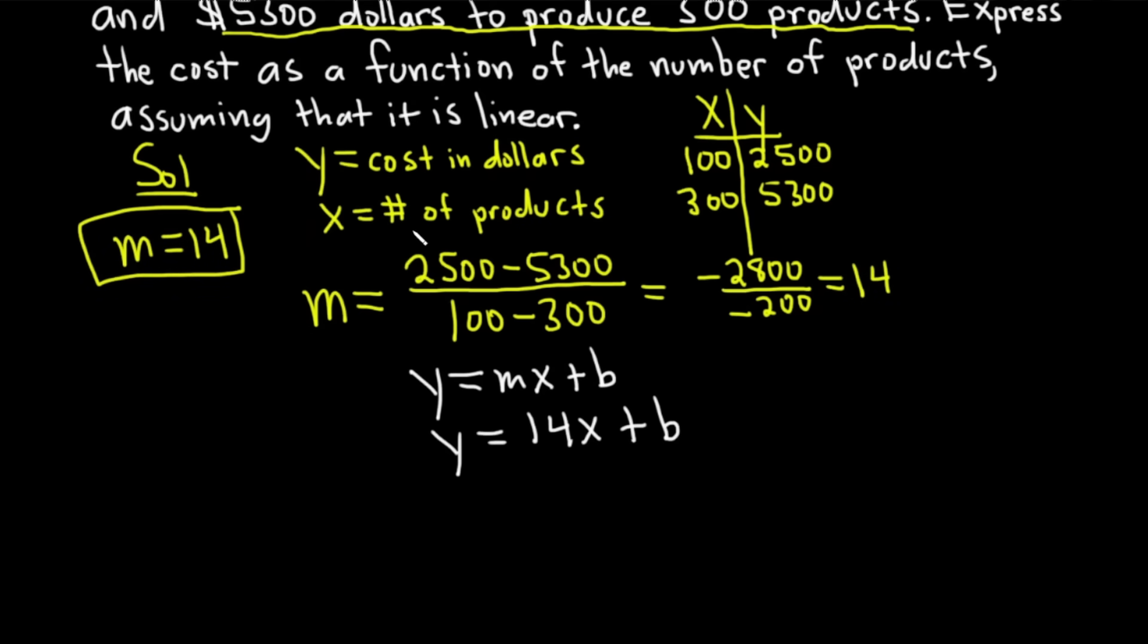So to find b, what we can do is we can use one of our ordered pairs. Let's use the first ordered pair, 100 comma 2,500. So now we're going to plug these numbers in to our equation y equals 14x plus b. So we're replacing y with 2,500. We have 2,500 equals, and then 14, and then replacing x with 100. And then we have the plus and the b.